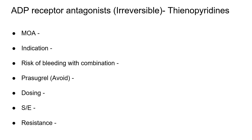Because irreversible inhibitors block platelets for the duration of their lifespan, after stopping these drugs the antiplatelet effect remains for five to seven more days. You cannot perform surgery during that window due to high risk of bleeding. So if surgery is needed in patients on irreversible antiplatelet agents, you must stop the drug and wait at least five to seven days.